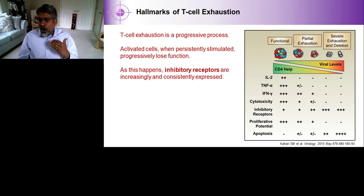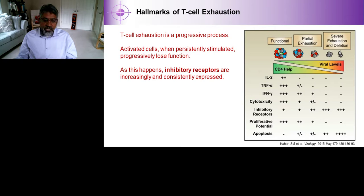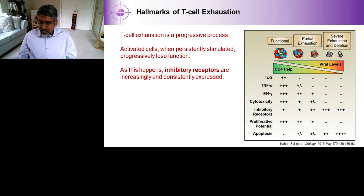It's a progressive process that happens not as an all-or-nothing condition, but gradually. Activated T-cells, when persistently stimulated, will progressively lose function — they'll stop expressing cytokines like IL-2, TNF-alpha, and interferon gamma. They'll lose their ability to kill other cells, and inhibitory receptors are increasingly expressed. The expression of certain inhibitory receptors like PD-1 can still happen while a cell is expressing some cytokines, but eventually proliferative potential is ultimately lost.